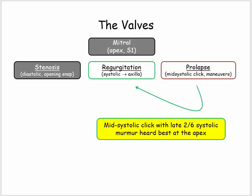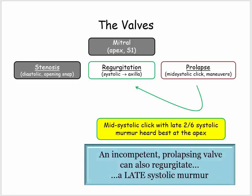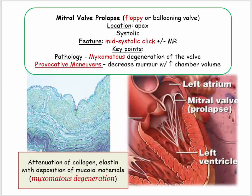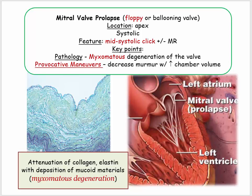Mitral valve prolapse can have a regurgitant murmur described concurrently, because the valve doesn't just click and prolapse — it is also associated with an element of incompetence. So don't get confused by the description of a late systolic murmur heard following the click. The key features: valve leaflets that prolapse, described as floppy or ballooning, still auscultated at the apex, and mitral regurgitation may also be present.